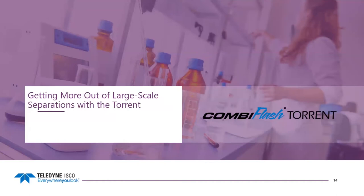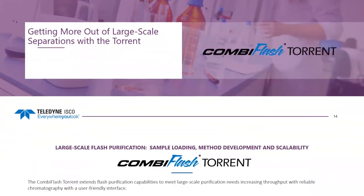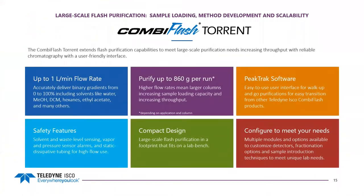The ComboFlash Torrent extends flash purification capabilities to meet large-scale purification needs, allowing increased throughput with reliable chromatography and a user-friendly interface. We can go up to 1 liter per minute flow rate, do binary gradients between A and B solvents, run from 0 to 100% with a variety of solvents in normal phase and reverse phase. We can purify up to 860 grams per run in some cases, dependent on application and column type. Higher flow rates allow use of larger columns, increasing sample loading capacity and throughput.